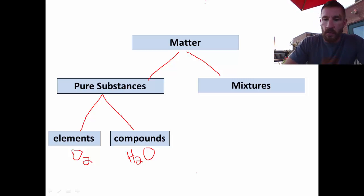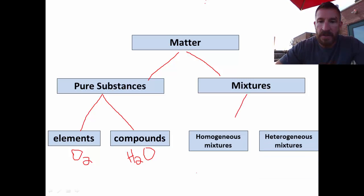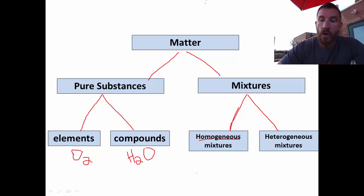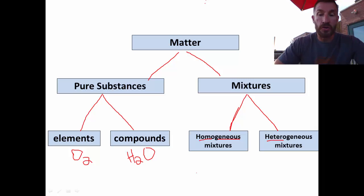Mixtures split into two different categories: homogeneous and heterogeneous. The word 'homo' means same, so homogeneous mixtures means the same kind. 'Hetero' means different, so heterogeneous is of different kinds. We split mixtures into homogeneous and heterogeneous based on uniformity.